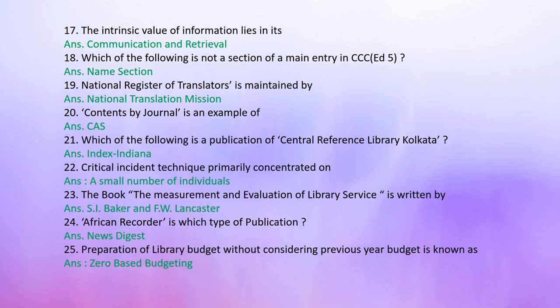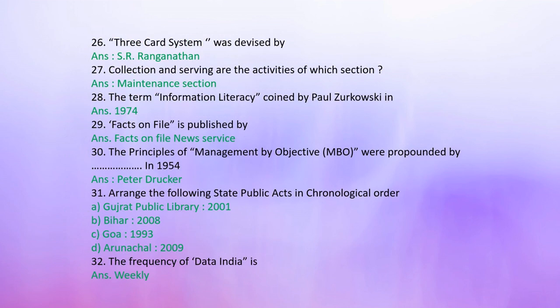Question 24: African Recorder is which type of publication? Answer: News digest. Question 25: Preparation of a library budget without considering the previous year's budget is known as — Answer: Zero-based budget. Question 26: Three-card system was revised by — Answer: Dr. S. Ranganathan. Question 27: Collection and serving are the activities of which section? Answer: Maintenance section.